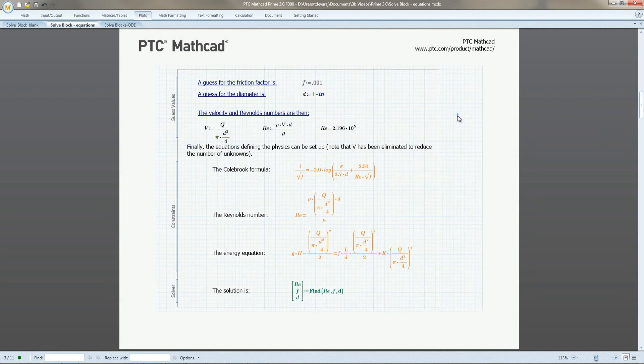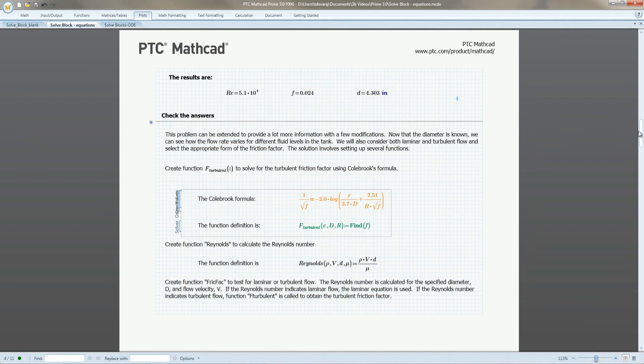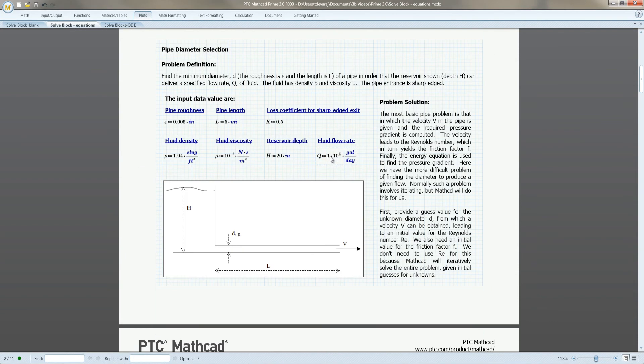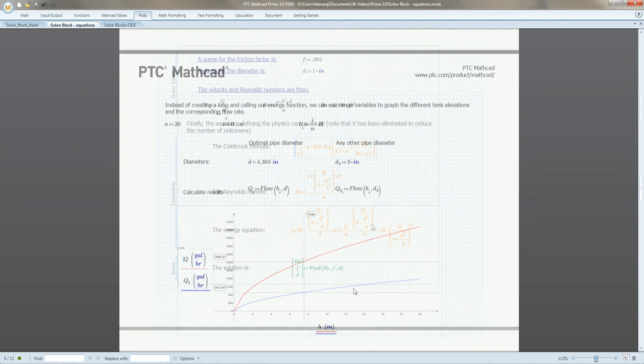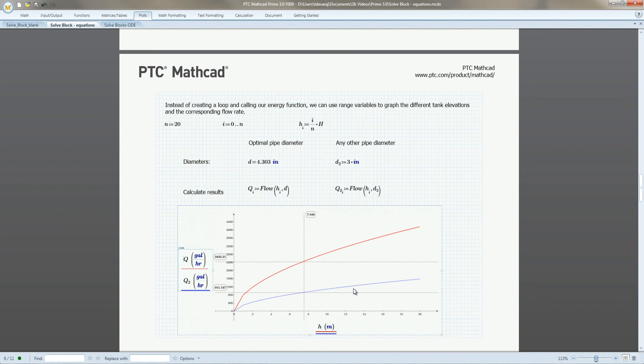We use the solve block to solve for the Reynolds number, friction factor, and pipe diameter. We extend this by parameterizing the solve block, allowing us to calculate the flow rate for any given reservoir depth. We plot this parameterized function to see how the flow rate, depth, and pipe diameters are related.